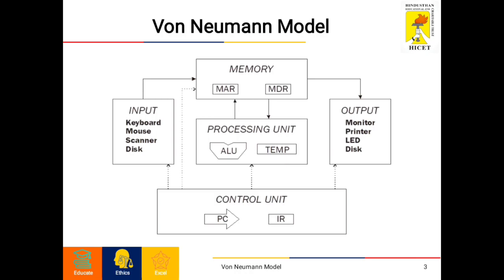The arithmetic logic unit, ALU, is defined as the part of the CPU that handles all the calculations the CPU may need, such as addition, subtraction, comparisons, etc. It also performs logical operations, bit shifting operations, and arithmetic operations.